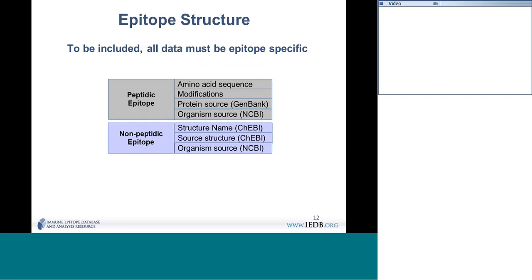All of the data in the database is epitope-specific. The majority are peptidic epitopes, and every peptidic epitope will have a linear amino acid sequence captured using standard capital letters. You can perform exact-match searches on the sequence, and if any of the residues were modified, we have a field for each amino acid that was modified.